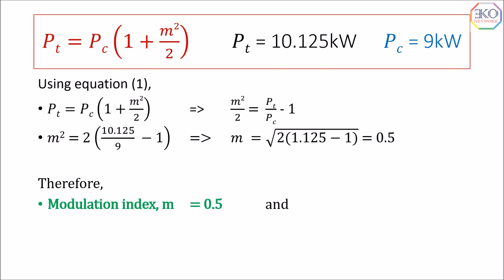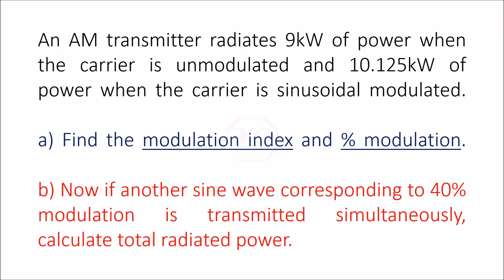The modulation index m is 0.5. Multiplying by 100 gives the percentage modulation as 50%. That covers the first half of the problem — modulation index 0.5 and percentage modulation 50%. Now we need to solve the second half.